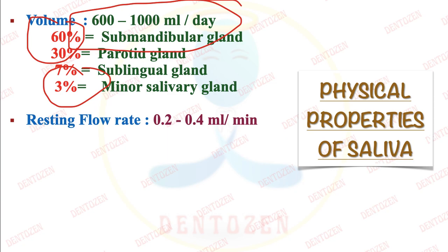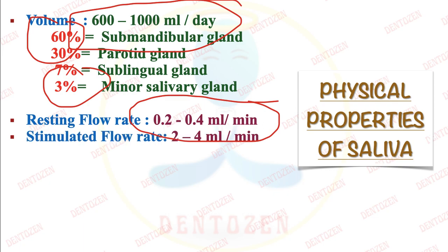Now let's see the flow rate of saliva. When we are at rest and not doing anything, the speed is 0.22 to 0.4 ml per minute. But when we are stimulated by food — if it comes to a gulab jamun for example — it gets stimulated. The stimulated flow rate is 2 to 4 ml per minute.